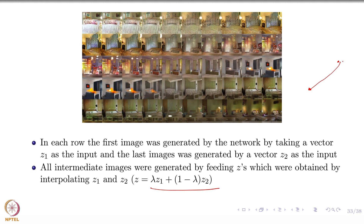Here is the idea: you take a Z1, you take a Z2 — these are the two images generated. Now you take all vectors which come between them and try to generate images from them. There is a smooth transition from Z1 to Z2 in the latent space because you are doing this interpolation. You would expect a similar smooth transformation in the image space also, and that is exactly what is happening. So you had this bedroom and another bedroom, and feeding Zs between Z1 and Z2 gives a smooth transition from the first bedroom to the second.